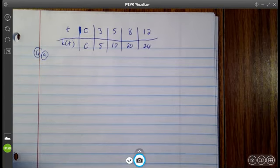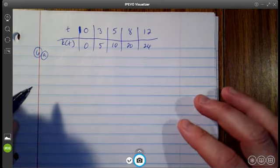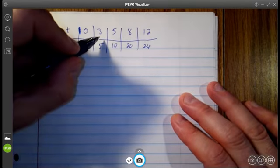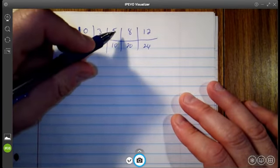Alright, so remember, acceleration is the derivative of velocity. So we are trying to estimate the derivative at t equals four. Alright,